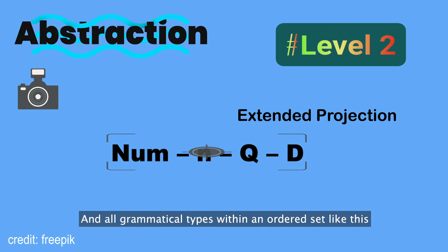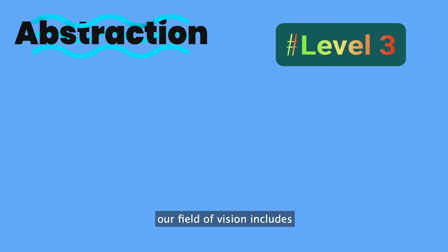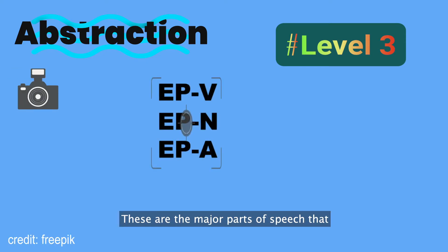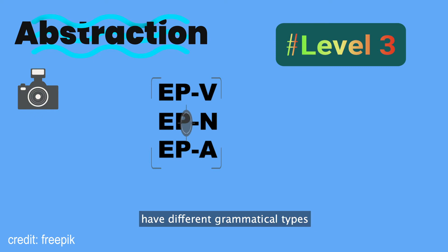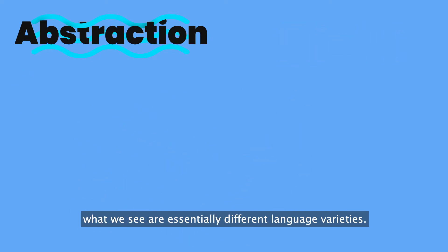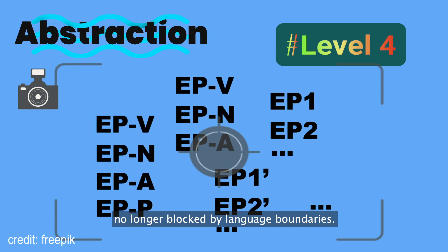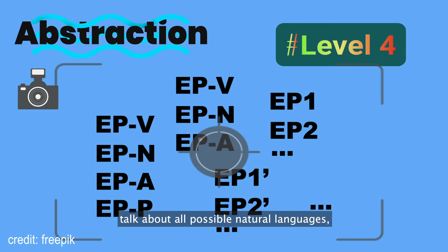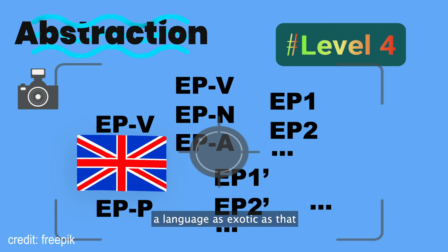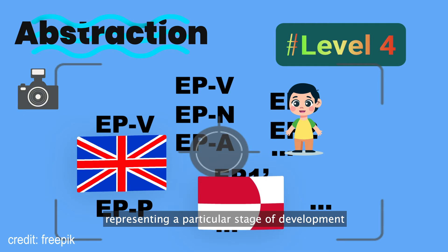As we zoom out onto the third level of abstraction, our field of vision includes not a single extended projection but a particular set of them — the major parts of speech that together define the structured part of a language's grammatical type inventory. Since different languages may have different grammatical types or even different parts of speech, as we move around at this level, what we see are essentially different language varieties. At the fourth level of abstraction, our field of vision is no longer blocked by language boundaries. We can see all possible combinations of extended projections in human language — all possible natural languages, be it a language as common as English, a language as exotic as that spoken in a remote Greenlandic village, or a language as transient as that representing a particular stage of development in a child's acquisition process.